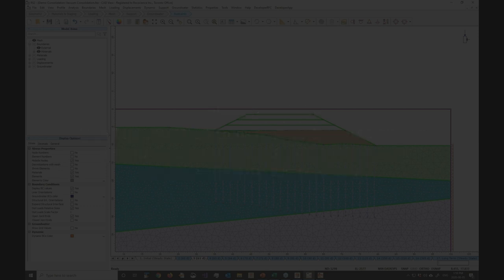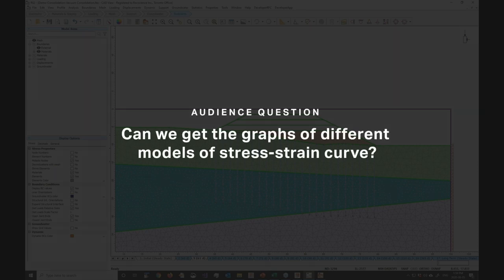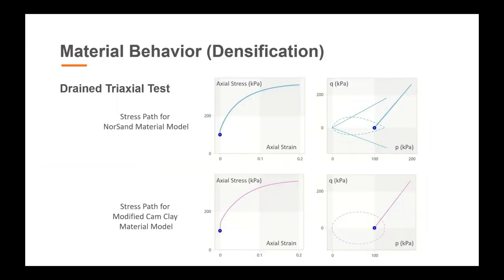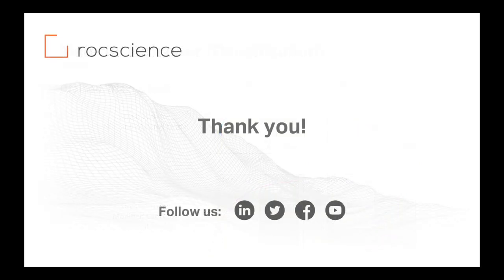Question: Can we get graphs of different model stress-strain curves? Yes — in a couple of months, the new RS Data program will be available. It allows you to test, evaluate, calibrate, visualize, and animate any constitutive model from RS2 and RS3. You can save calibrated material models and import them into other tools. Thank you all very much. Most questions have been answered. If anything remains, please email us, and we look forward to the next presentation in September.